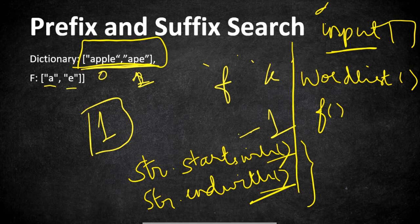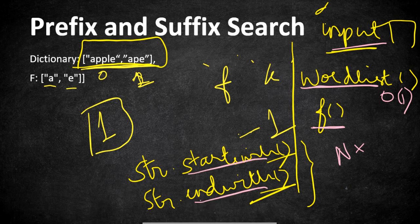Before going to the second approach, let's look at the time complexity. In the WordFilter function we simply put all dictionary words into a string array, so that takes constant time. For f(), we iterate all the words once — that's O(n) — and for each word we check startsWith() and endsWith(), which takes O(l) where l is the length of the string. So overall the time complexity is O(n * l).